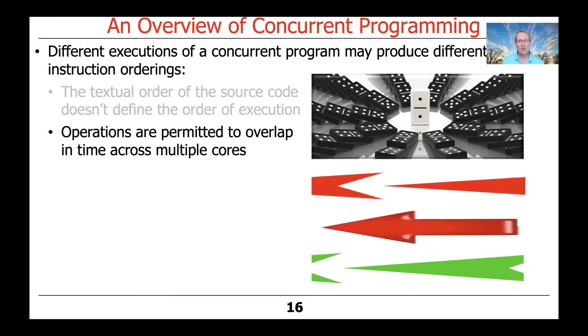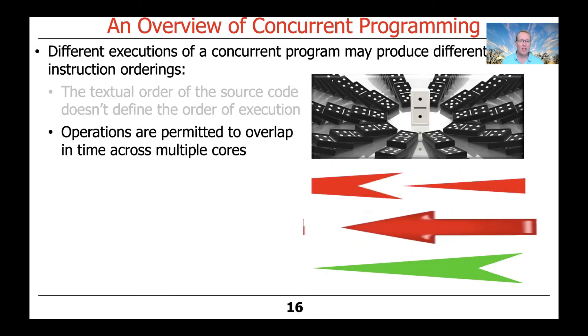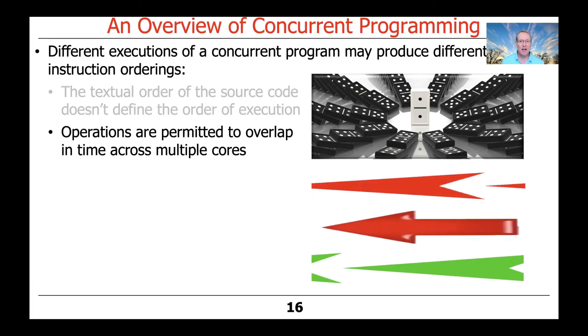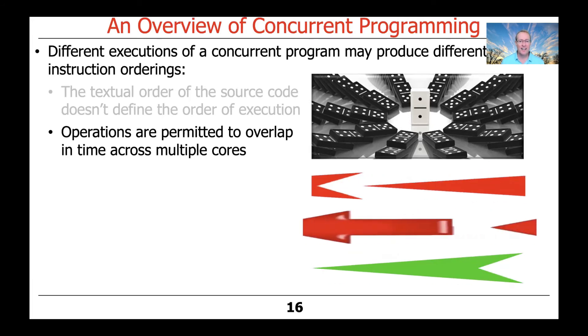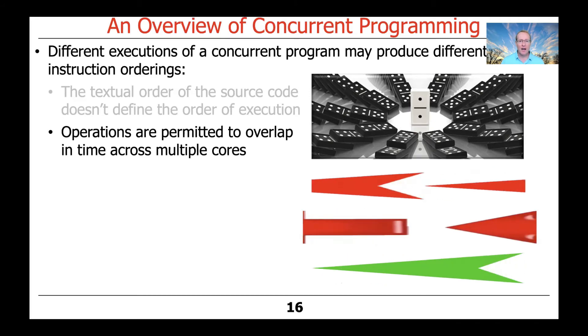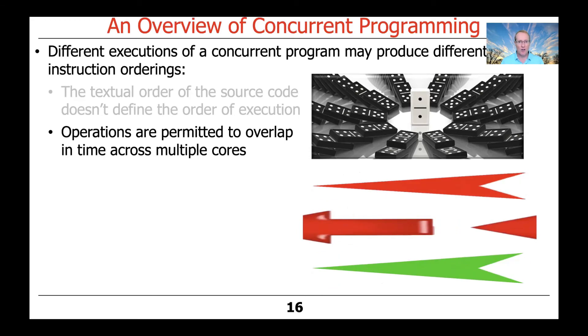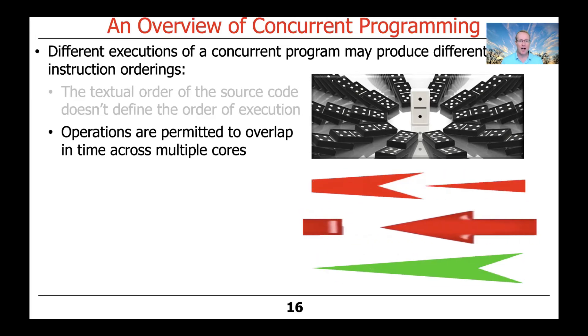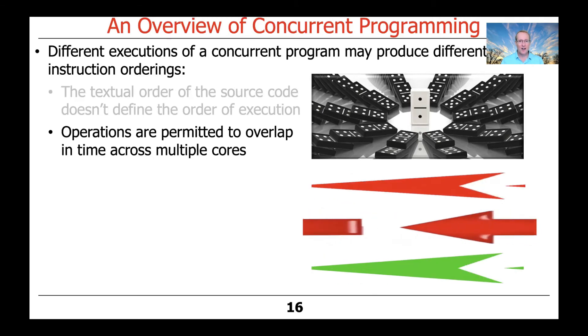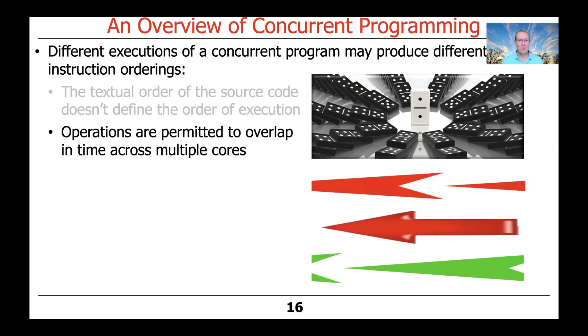Another thing that's different about concurrent and sequential programs is that operations are permitted to overlap in time across multiple cores. If I have three cores, each of which is running different instructions, then the computations running on the different cores can overlap in time. One can be running in one core, which is overlapping when another computation is running on another core. They really literally can be going physically at the same time. That helps to improve performance. It's also an indication of non-determinism. And if you don't handle things correctly, it can also be a source of many concurrency hazards, which we'll talk about shortly.